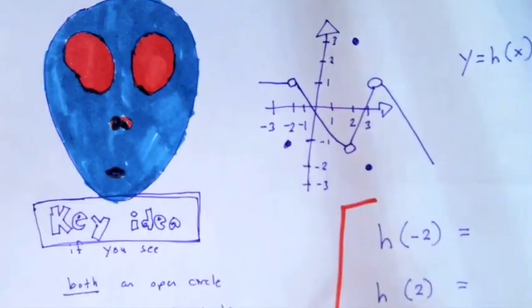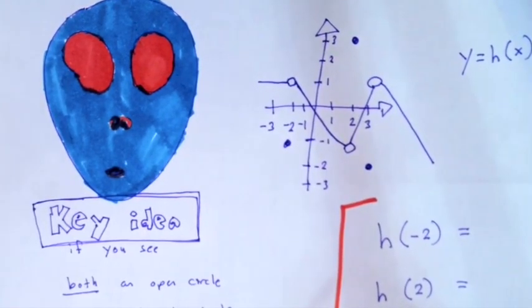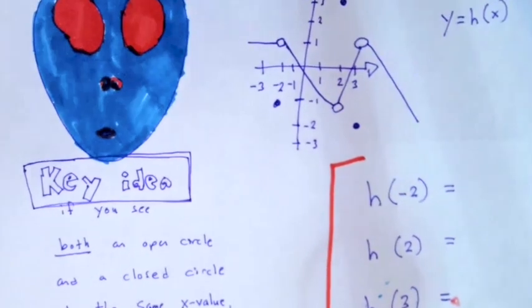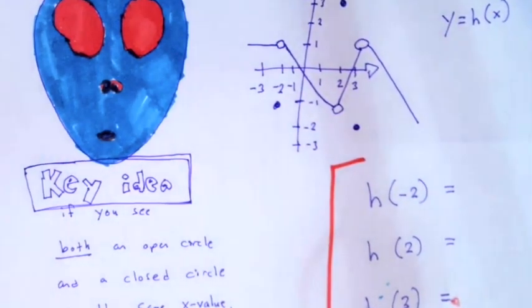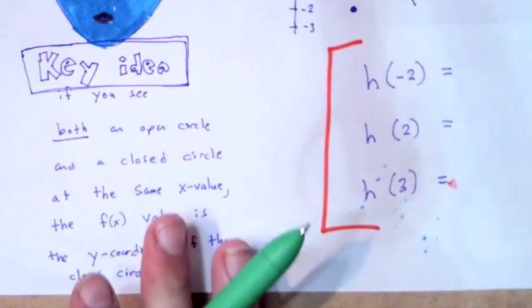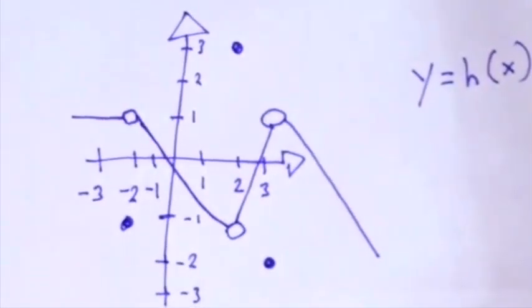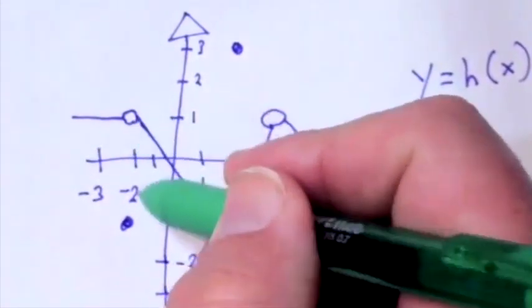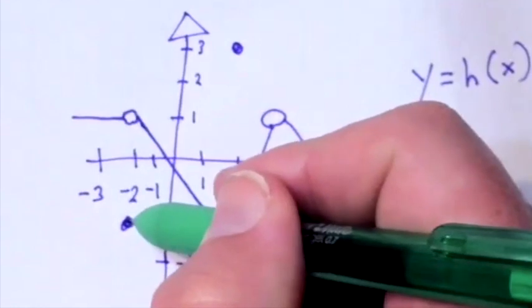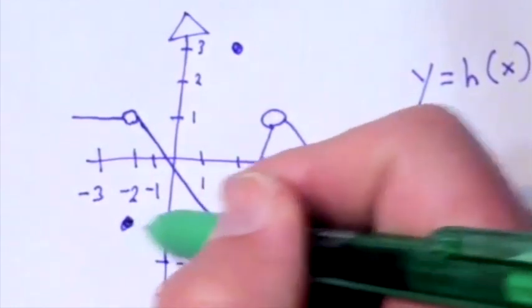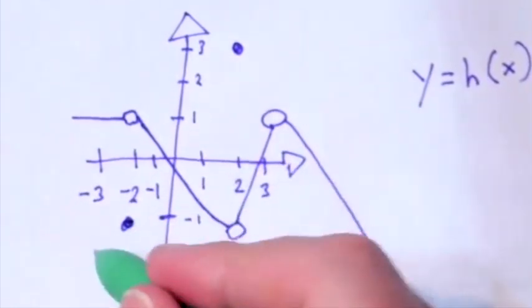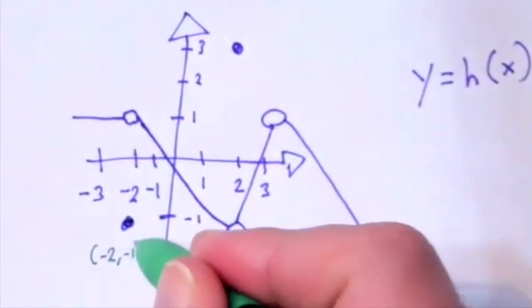Look at our alien friend here and what he says. If you see both an open circle and a closed circle at the same x value, the f of x value is the y coordinate of the closed circle. So we can look at this graph and say, what is h of negative 2? At x equals negative 2, there is an open circle and a closed circle. We look at the closed circle and the closed circle is at y equals negative 1. So I have this point negative 2, negative 1. h of negative 2 is negative 1.